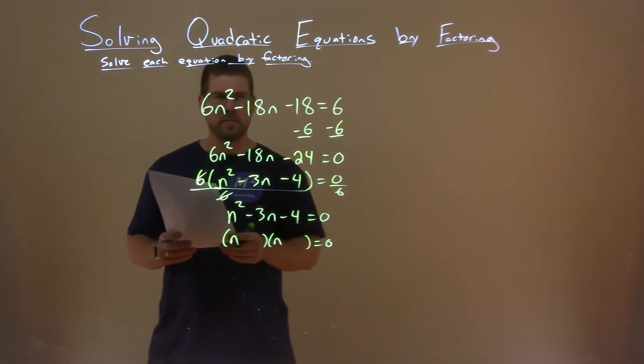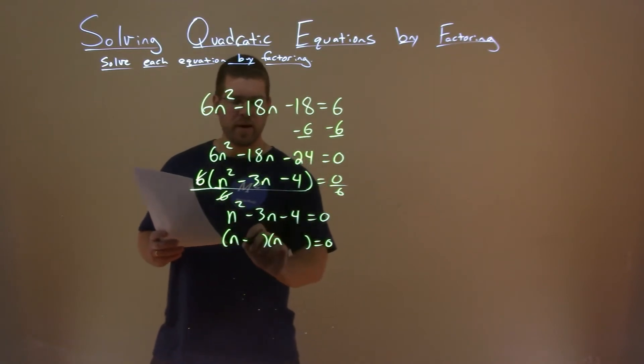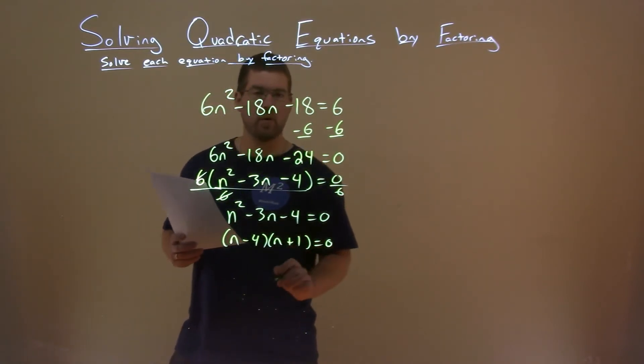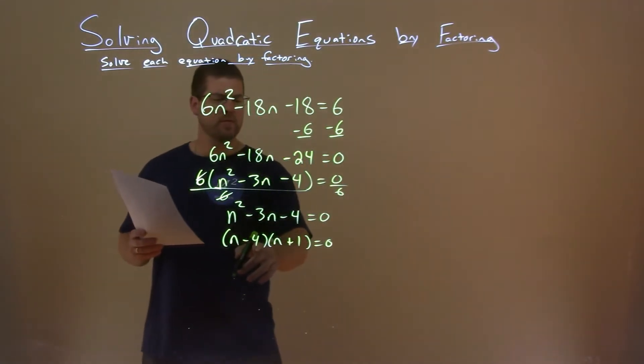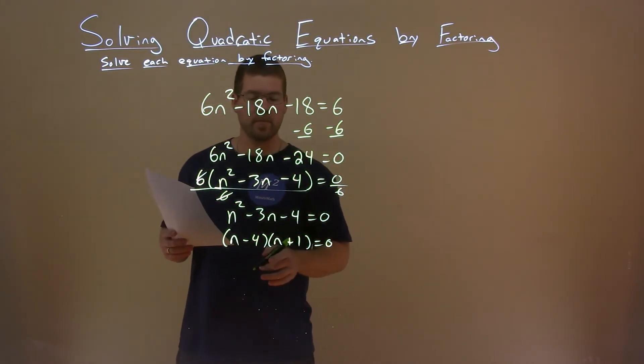Well, what about minus 4 and a positive 1? Negative 4 times positive 1 is negative 4. Negative 4 plus 1 is a negative 3.